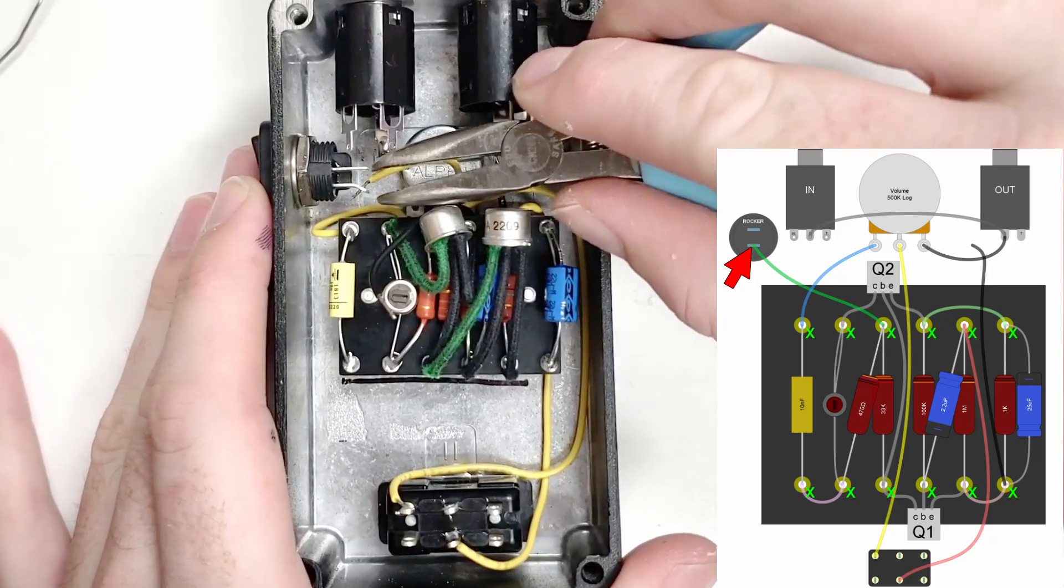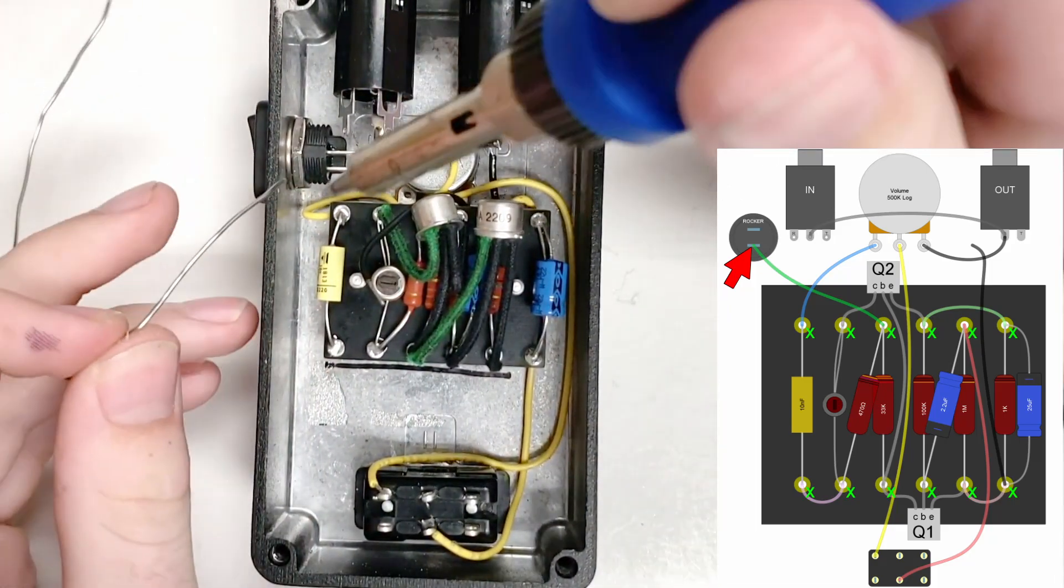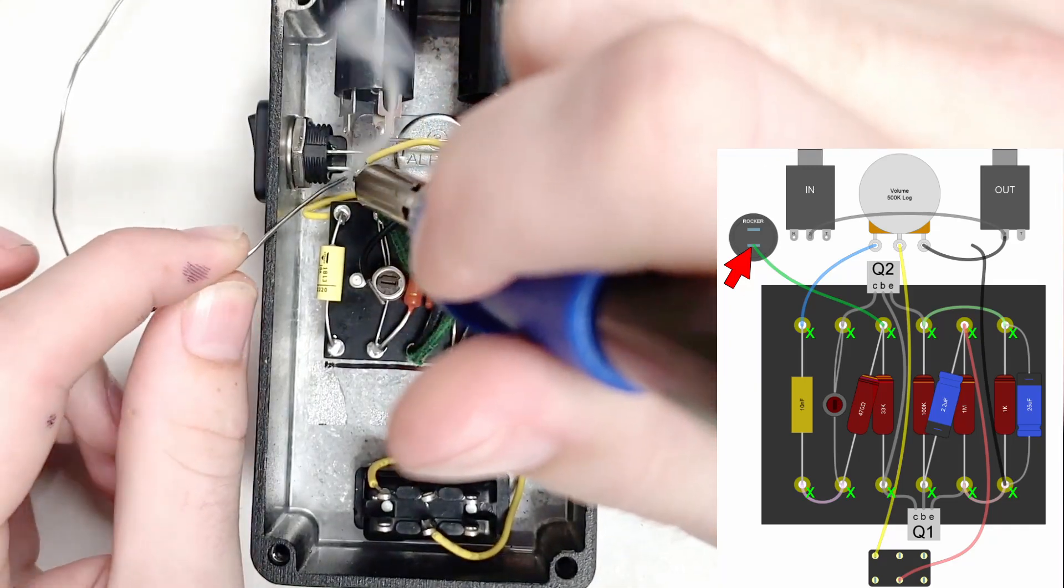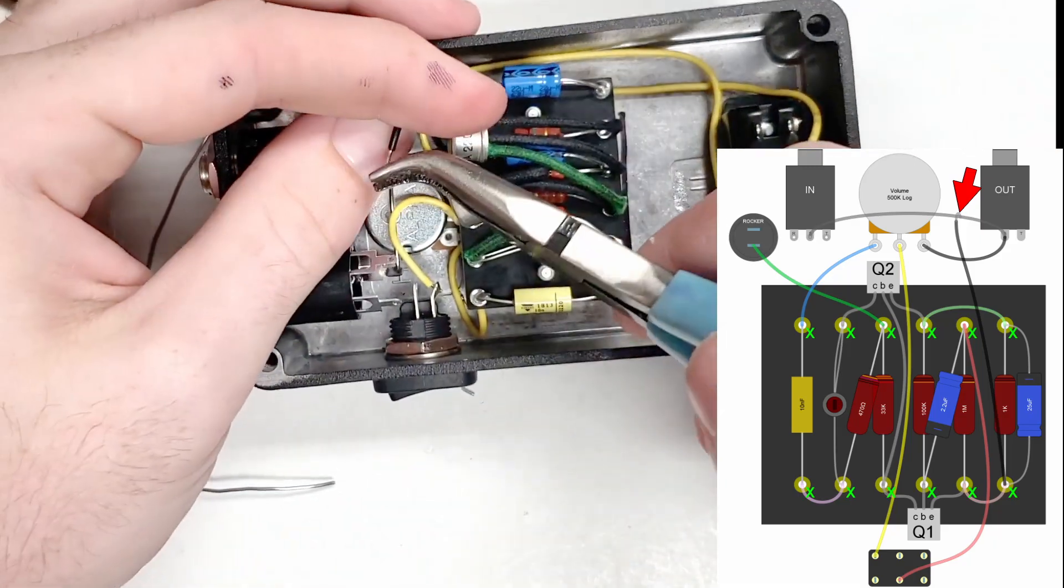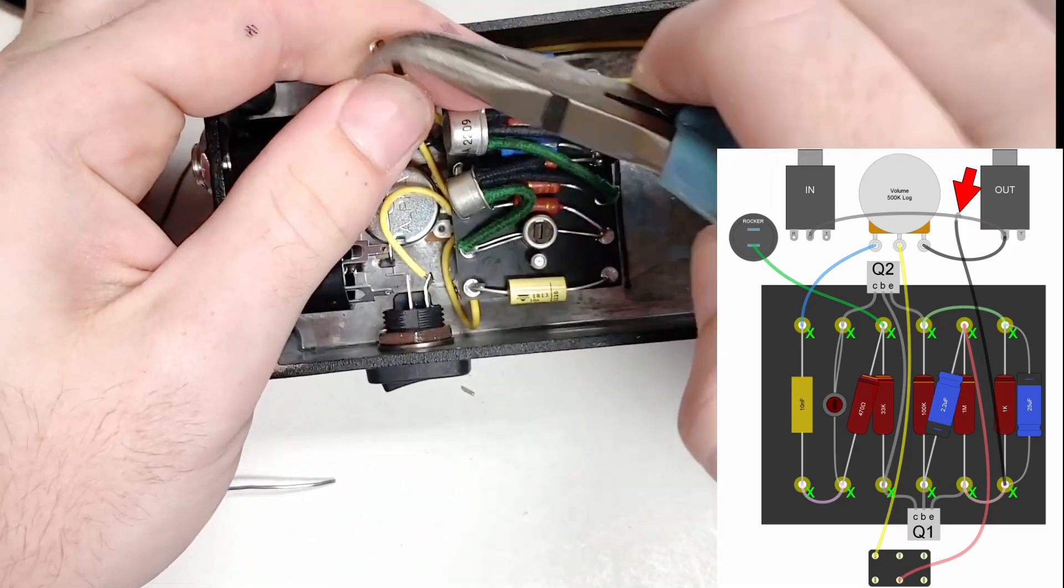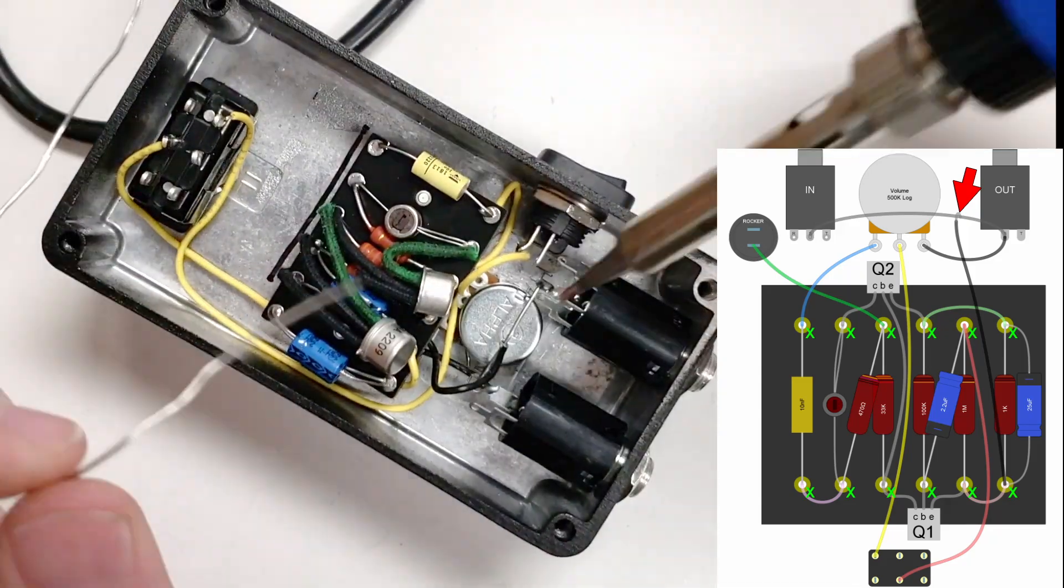Next, we'll solder the negative 9 volt connection to one of the lugs of the battery switch. Now we'll solder the board's ground connection to the ground bus. First, we put a loop in the stripped end and hook it onto the ground bus before soldering it into place.